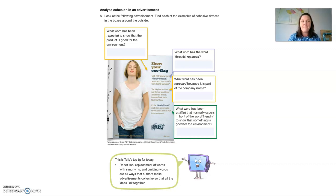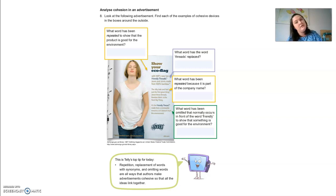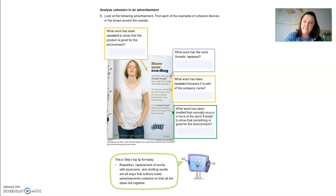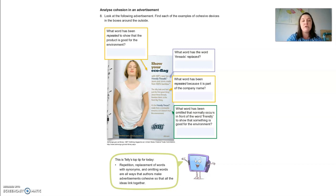The word repeated to show the product is good for the environment is 'friendly.' The word that 'threads' has replaced is 'clothes' — so instead of 'friendly clothes,' they've tried to be trendy and use the word 'threads.' The word repeated because it is part of the company name is 'thing.' And the word omitted that normally occurs in front of 'friendly' — used at the very beginning as 'Show your eco flag' — is 'eco.' Usually 'eco-friendly' means something is good for the environment. If you got those right, good job!